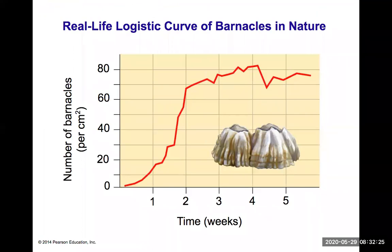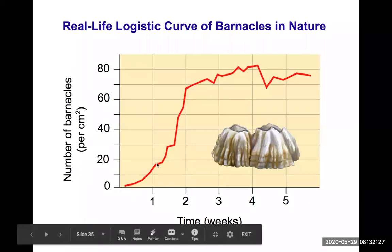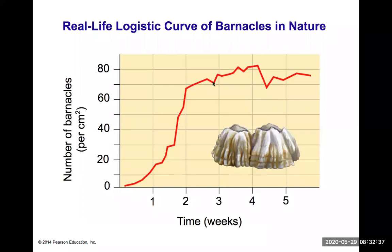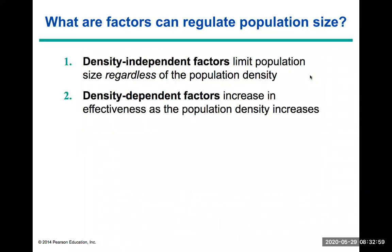A more realistic example is barnacles — a real-life logistic curve. The barnacle population rises slowly and steadily at first, then could grow rapidly, but ultimately hovers around a carrying capacity of approximately 70 barnacles per centimeter squared. The graph shows a zigzag line fluctuating around this carrying capacity, which is what limits the population size over time.